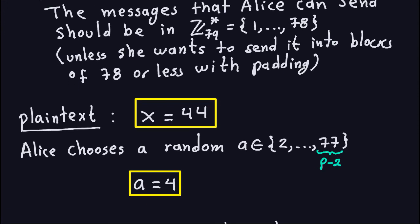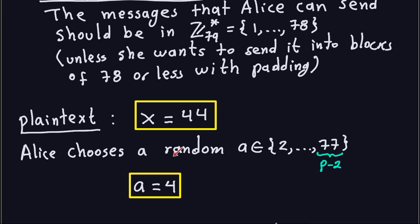Alice also has to make some choices. She has to choose a random number between 2 and P minus 2, which is 2 and 77. It's important that every single time Alice wants to send a message, she chooses a new random number. This A, in theory, should not be reused for any other message.